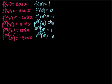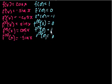So what's the pattern as we take the derivatives? 1, 0, minus 1, 0, 1, 0, negative, 0, positive. So it alternates between 0 and 1. Every other number is a 0, and then between them, we alternate between a positive 1 and a negative 1.